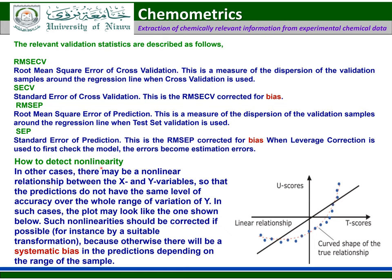To detect non-linearity: in some cases there may be a non-linear relationship between the x and y variables, so that predictions do not have the same level of accuracy over the whole range of variation of y. In such cases, the plot may look like the one shown. Such non-linearity should be corrected if possible by doing some transformation, because otherwise there will be a systematic bias in the prediction depending on the range of the sample.